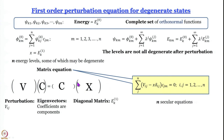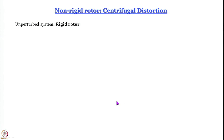We have this diagonal matrix where the diagonal elements give the values of first-order corrections to energies. The first system we discuss is the non-rigid rotor, and the perturbation we have to consider is centrifugal distortion.